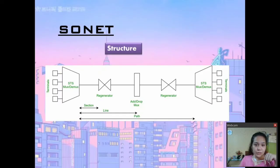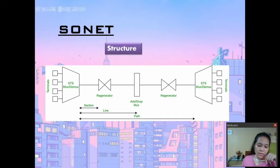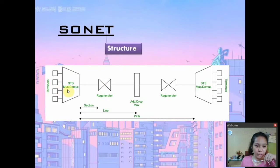Next is the structure of SONET. Here are the terminals, which can be either a transmitter or a receiver. Since it is bidirectional, it can function as either. We have the STS, MUX, and DMUX — if we use a transmitter we use the MUX, and if we use a receiver we use the DMUX. The optical fiber connects the equipment, and the connection from the STS to the regenerator is called a section.